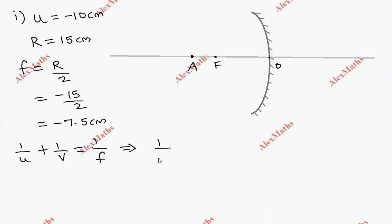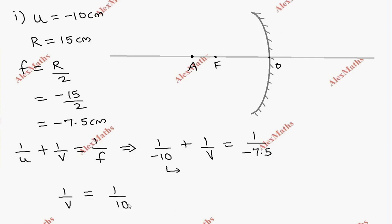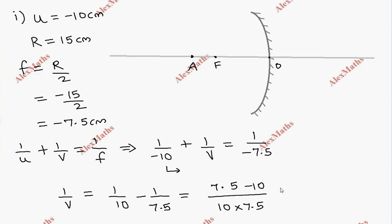Substituting the values: 1 by minus 10 plus 1 by v equal to 1 by minus 7.5. Rearranging, 1 by v equals 1 by 10 minus 1 by 7.5. Taking the LCM, the product is 10 into 7.5, which is 75.